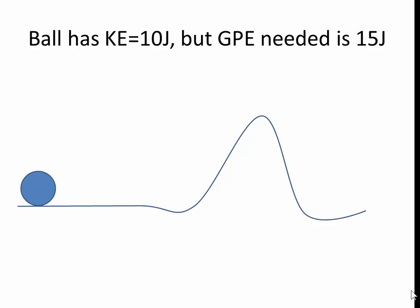We have a ball which has a kinetic energy of 10 joules, but the gravitational potential energy needed to be overcome for it to go over the hill is 15 joules. Can the ball go over the hill if it just has 10 joules? So the ball has 10 joules of kinetic energy. The barrier, this potential barrier as it were, is 15 joules.